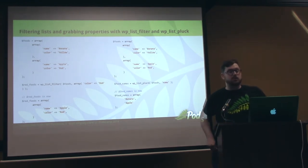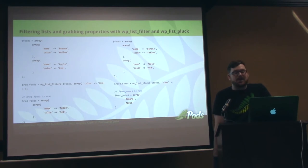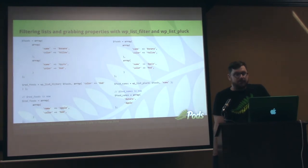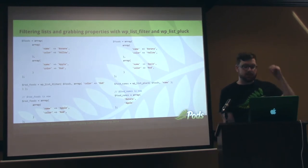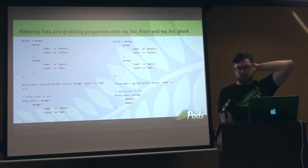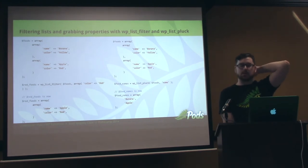Pluck is also really useful if you just want to get one property out of the array. In this case, we're just going to get all of the names — we only want those, not the colors or anything else. And you can combine those: do a List Filter to get all items with color red, then do a List Pluck to get the name out of all those. When I first started development, this was probably something I would have really loved.